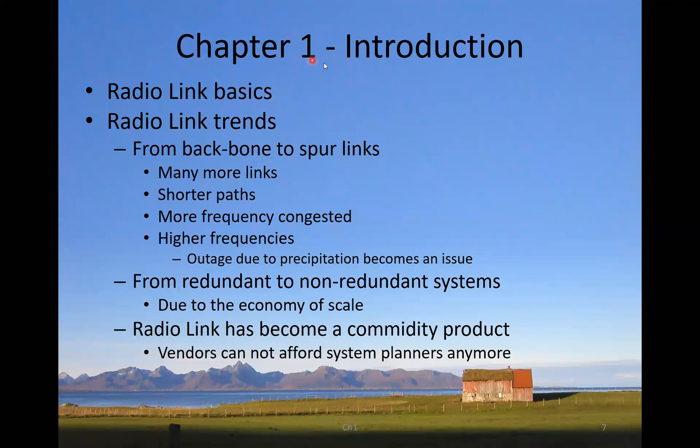Okay, chapter one, which is the introduction chapter. We will look at the radio link basics. We will look at the trends and the trends is from backbone to spur links. There are many more radio links now than ever been, but the paths are shorter and it's more frequency congested. And as also higher frequencies, and then outages due to precipitation becomes an issue because at high frequency rain and sleet and snow is a problem. And it goes from redundant to non-redundant systems because when they are short paths, it's in the outer parts of the network. And then you can save money by making them non-redundant. And that's due to the economy of scale.